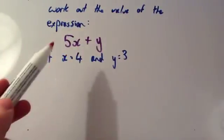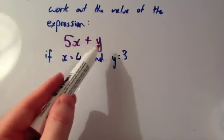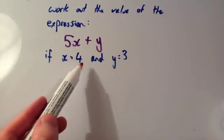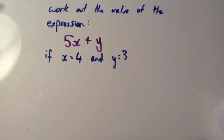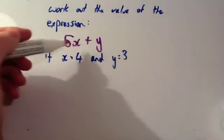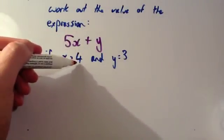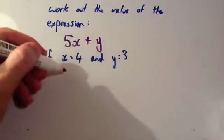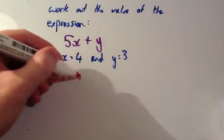It says, work out the value of the expression 5x plus y if x equals 4 and y equals 3. So this means 5 times x plus y. So we're going to do 5 times 4 plus 3. So 5 times 4 plus 3.